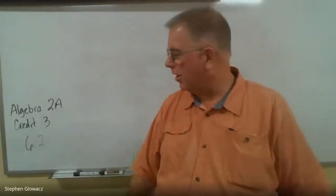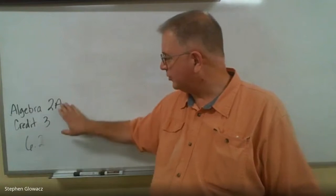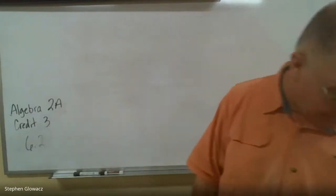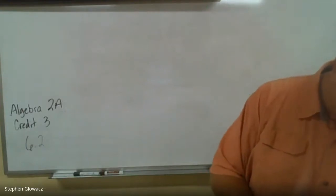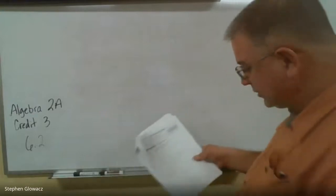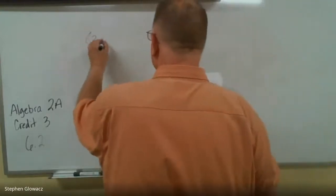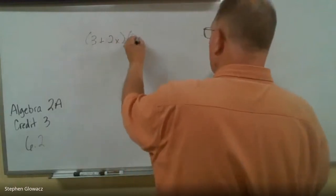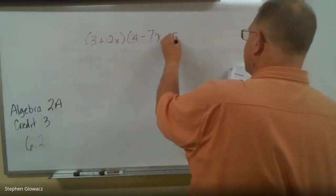Moving on to Lesson 6.2 of Algebra 2A, Credit 3, and this is multiplying polynomials. We are on page 29, problem number one, a little past the middle of the page. We have (3 + 2x) times (4 - 7x + 5x²).